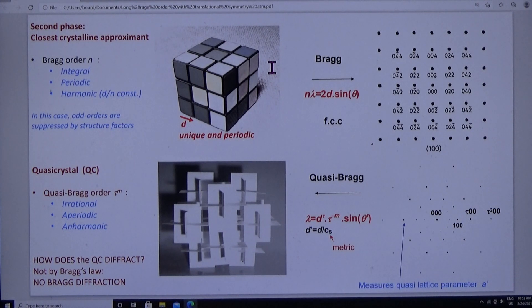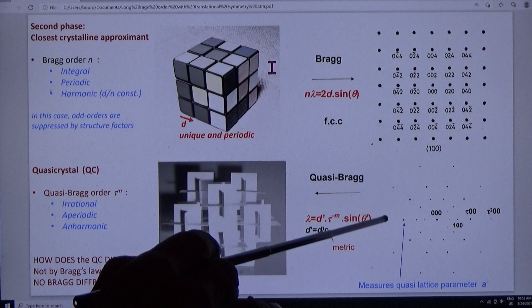It's irrational and geometric. It's aperiodic. It's anharmonic. How in heaven and earth does it diffract with a sharp diffraction pattern?